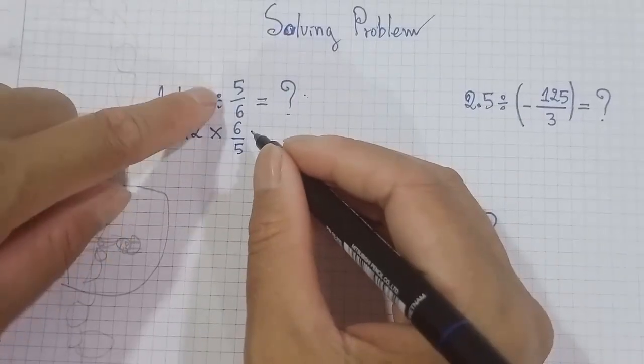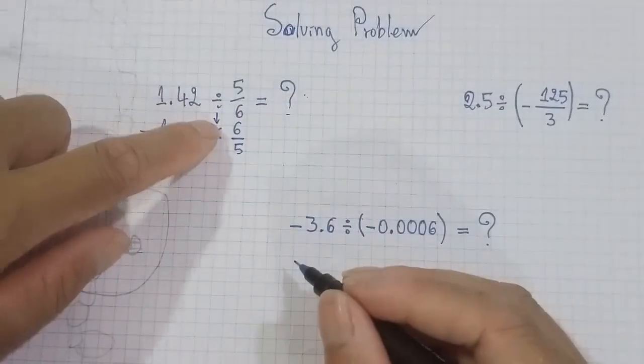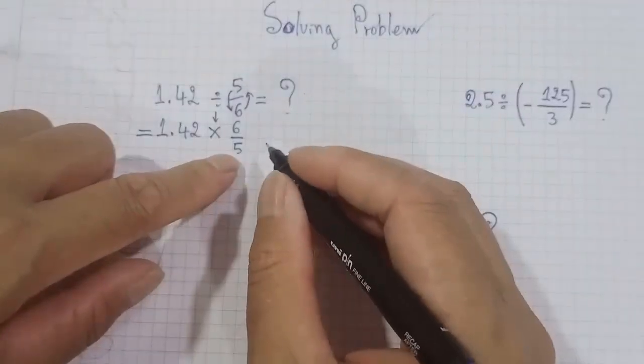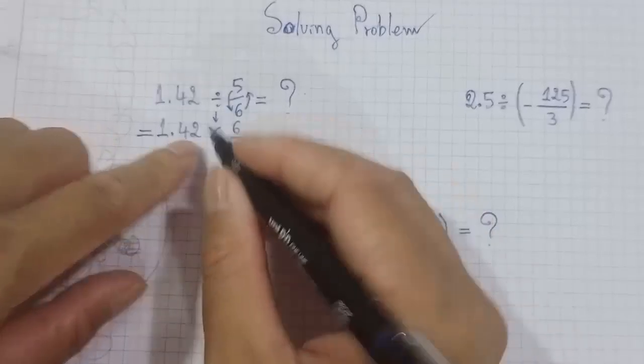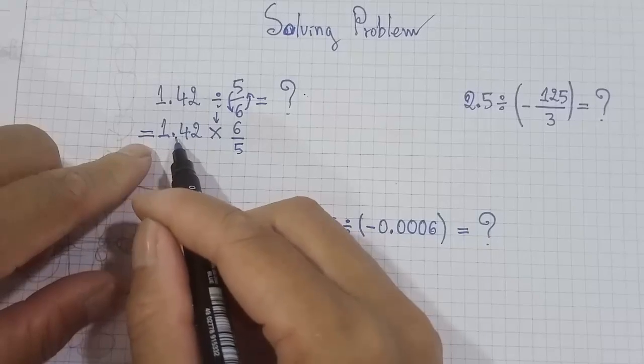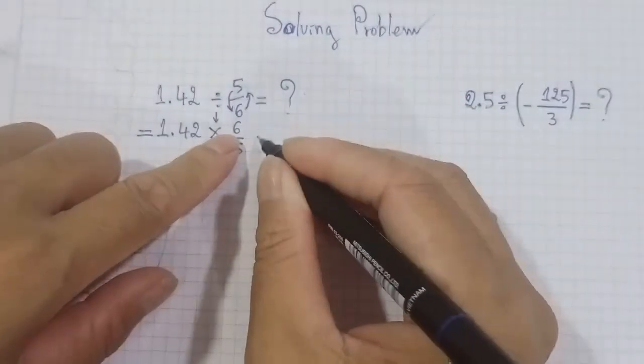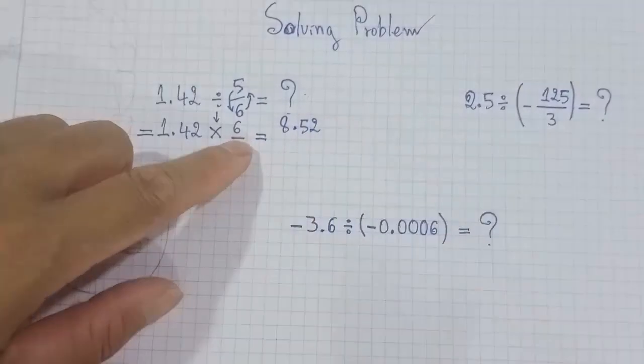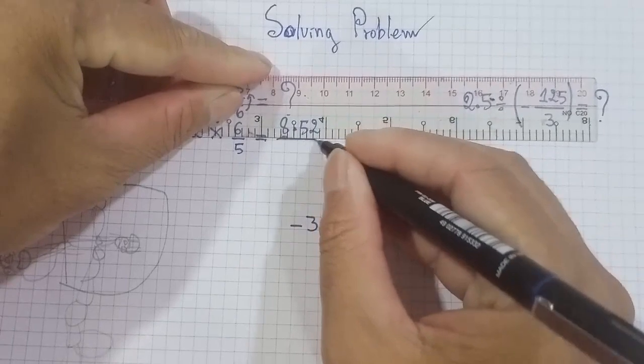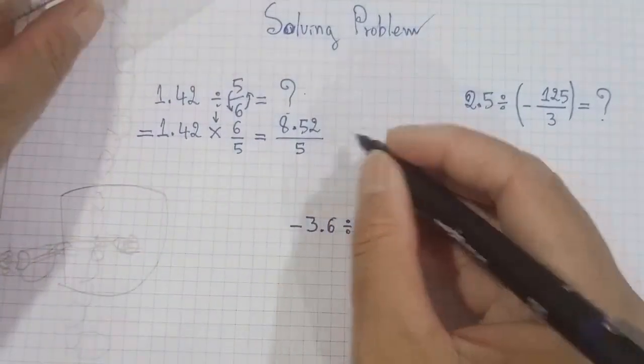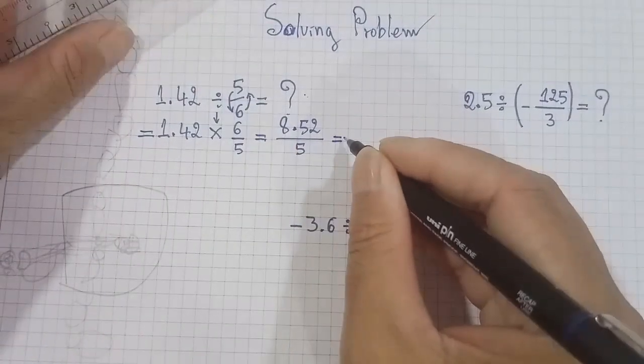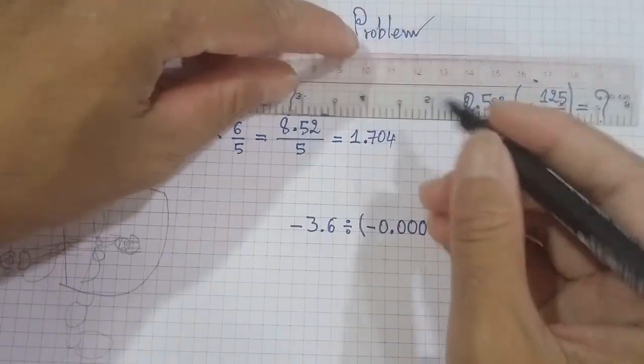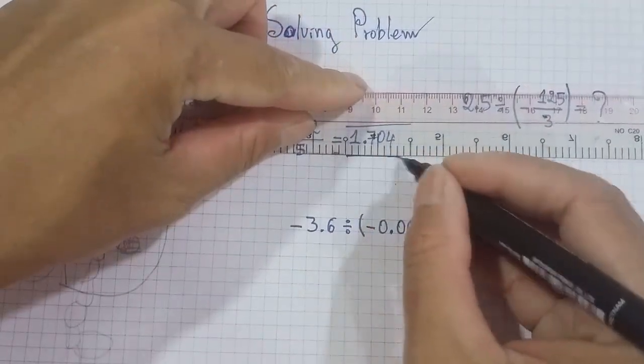Six up and five down because we change it here. When we change this, this changes to up and this down. So now you can calculate. 1.42 multiply with 6 equals 8.52, divided by 5. So the result is 1.704. Okay, this is the answer. Easy for you.